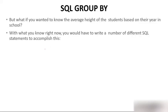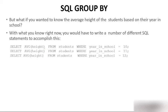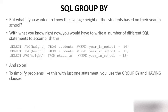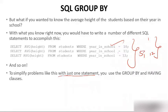But what if you wanted to know the average height of students based on their year in school? Suppose you want the average height of class 5, 6, 7, 8, 9, and 10. With what you know right now, you would have to write a number of different SQL statements. You would write: SELECT AVG(height) FROM student WHERE year_in_school = '10th', then again for 11th, 12th, and so on. If there are classes 1 to 12, you'd need to write 12 separate queries.